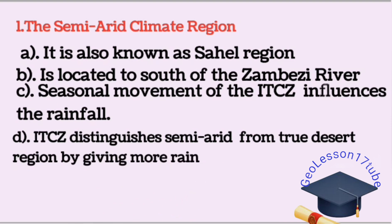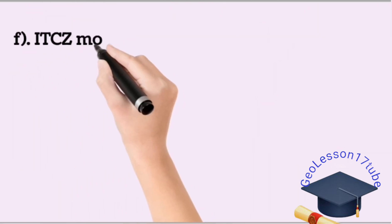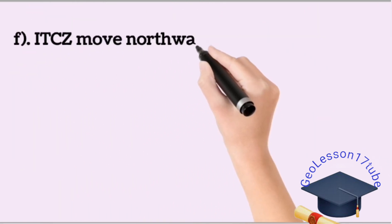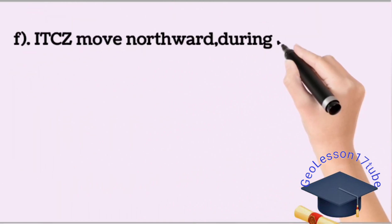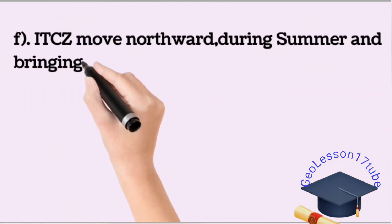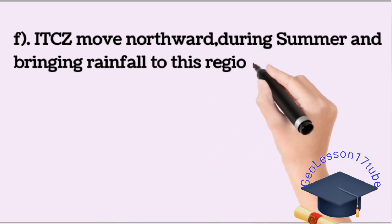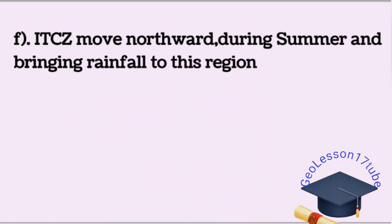ITCZ distinguishes the semi-arid region from the desert region by giving more precipitation. The hot desert is known for the deficiency of precipitation. The ITCZ moves northward during the summer, especially starting in June, bringing rainfall.